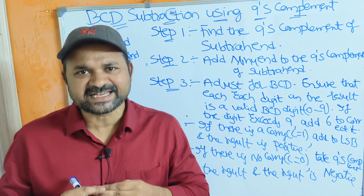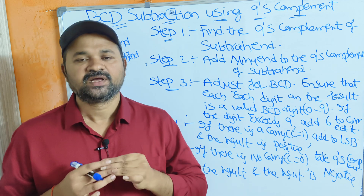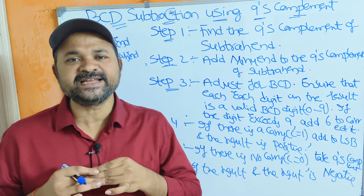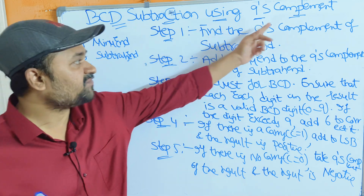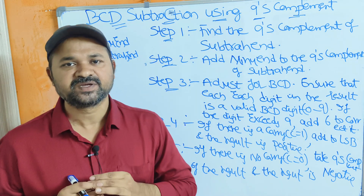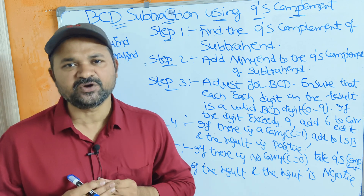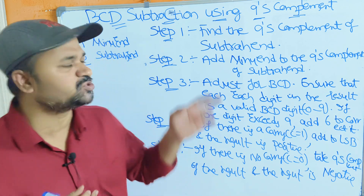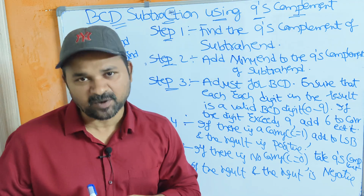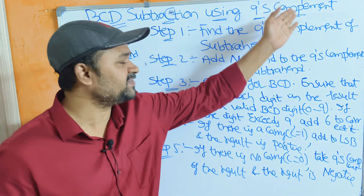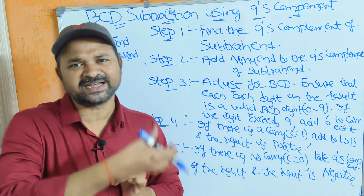Now let us discuss BCD subtraction. We can perform BCD subtraction using two approaches: the first one is 9's complement, and the second one is 10's complement. In this video we are going to discuss BCD subtraction using the 9's complement. Let us discuss with the help of two examples. Before that let us see the theory.